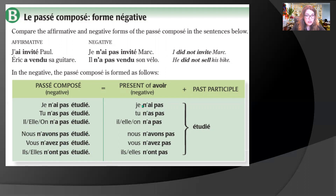Essentially what we did is use the negative form of avoir: je n'ai pas, tu n'as pas, il/elle/on n'a pas, nous n'avons pas, vous n'avez pas, ils n'ont pas — the negative present tense of avoir — followed by étudié, the past participle. So: I did not study, you did not study, he/she/it did not study, and so forth.